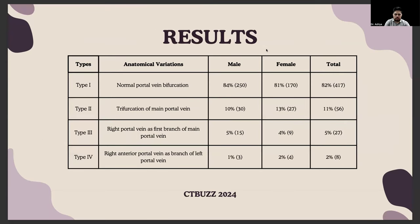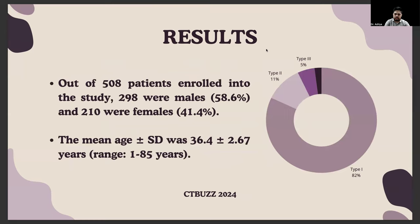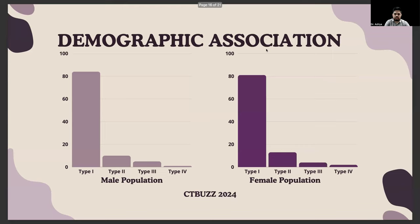The results of the study were as follows. Normal bifurcation of the main portal vein was observed in approximately 82% of individuals. Type 2 trifurcation was observed in 11% of individuals. Type 3 was observed in 5% and Type 4 anatomical variation in 2% of individuals. The results are also displayed in chart and diagrammatic format. Of the 508 patients enrolled, 298 were male and 210 were female. The mean age was 36.4 years ± 2.67 years, with a range of 1 to 85 years. Demographic associations between male and female populations with respect to portal vein variations were also analyzed.